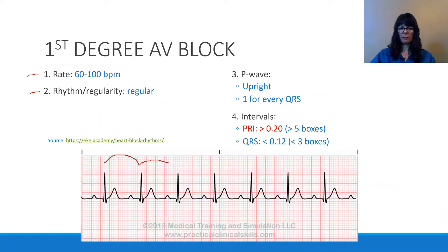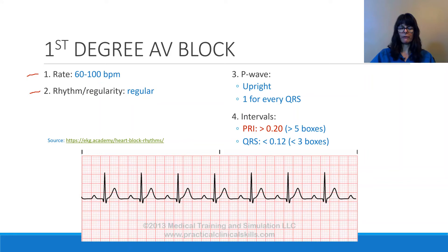We can see with the naked eye that the QRS complexes have the same distance. We could also use calipers and march this out, or overlay it with a piece of white paper to confirm a regular rhythm. In terms of the P wave, in first-degree AV block the P waves will be normal, upright, and there will be one for every QRS. Because of the conduction delay, the PRI is prolonged at greater than 0.20 seconds or greater than 5 boxes. The QRS is typically normal at 0.12 seconds or less.